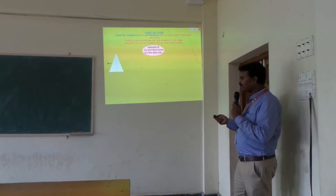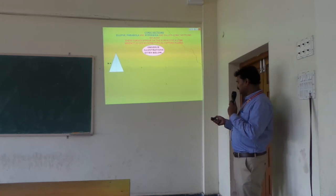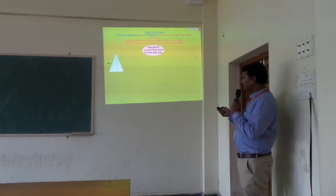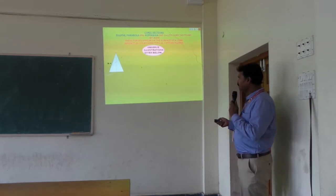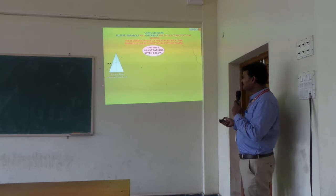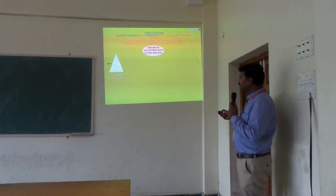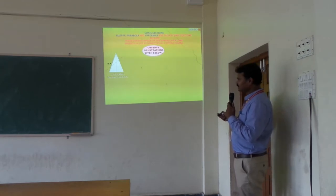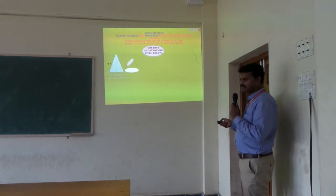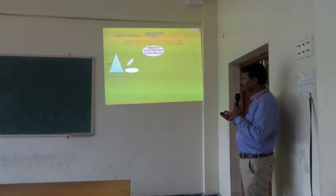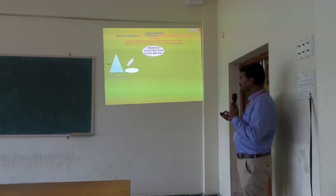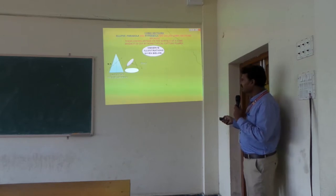Here is a cone. The cone is cut by a section plane passing through the generators. All these are different types of generators. After the generators are cut by this section plane, we remove the top portion and the remaining bottom portion forms an ellipse.